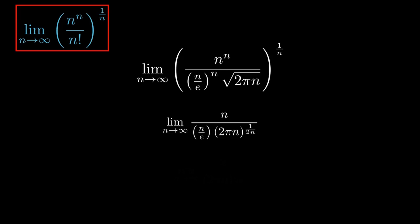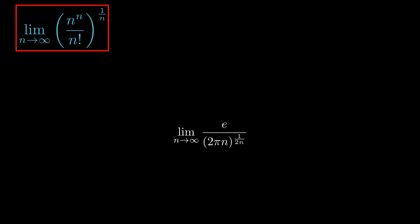We can see that both n's cancel with each other. If we multiply the numerator and denominator by e raised to the first power, we get the limit as n goes to infinity of e raised to the first power divided by 2πn, all raised to 1 over 2n.